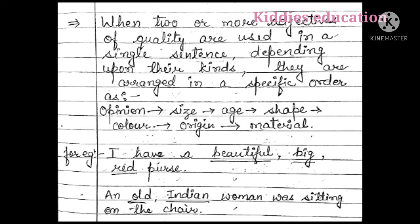We arrange them as: 'I have a beautiful big red purse.' Beautiful is opinion, big is size, and red is color. So the order of quality adjectives is: opinion, then size, then age, then shape, then color, then origin, then material. Another example: 'An old Indian woman was sitting on the chair' — old comes before Indian, following age before origin.